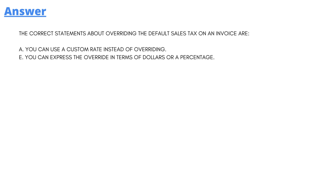The correct answer to the question is Option A — you can use a custom rate instead of overriding — and Option E — you can express the override in terms of dollars or a percentage.